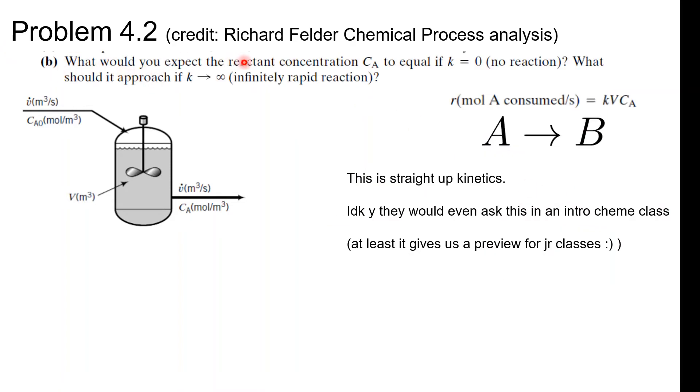So part B. What would you expect the reactant concentration CA to equal if K equals zero (no reaction)? What should it approach if K equals infinity (infinitely rapid reaction)? This is an intro chemi class, but it's good that he's giving us a preview of the future classes. Pause it and think about this for just a sec. At least they gave us this equation - this is, by the way, a first-order chemical reaction. We might have even saw this in gen chem because the reactant A goes to product B.